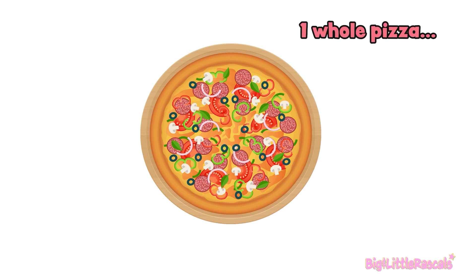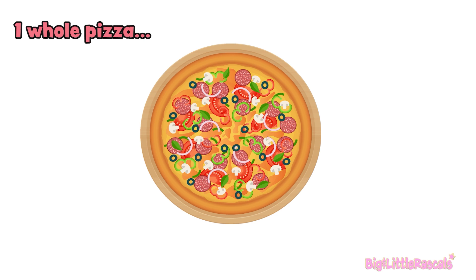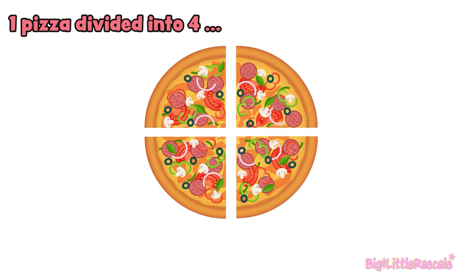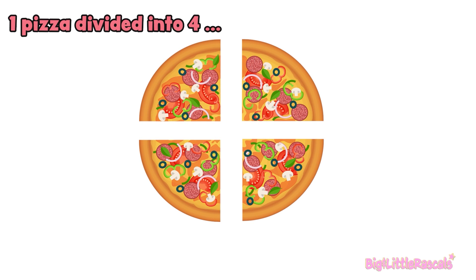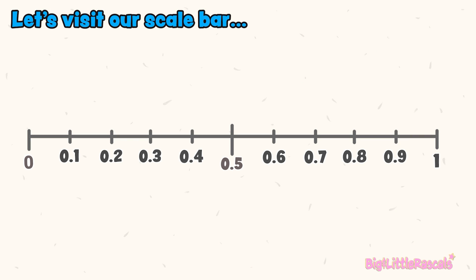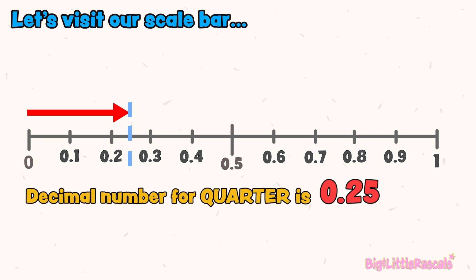Now I'm dividing this pizza into four. How much is that in fraction? One whole pizza divided into four becomes a quarter. And how do you say this in decimal number? Let's zoom in. So in decimal number, a quarter is 0.25.